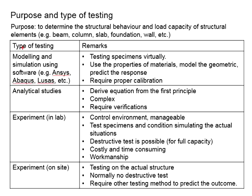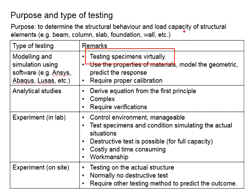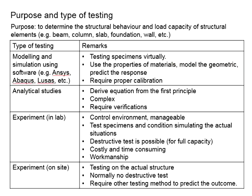Now let us talk about different types of testing. You can do modeling and simulations using software — for example, ANSYS, ABAQUS, LUSAS, and other finite element modeling software. This kind of software can be used to test the specimen virtually. You will need to determine the properties of the materials, model the geometry, determine the boundary conditions, and run the simulations in order to predict the response of the structural elements.